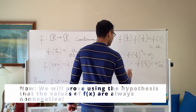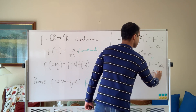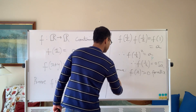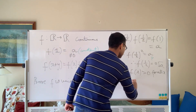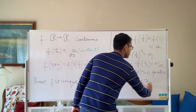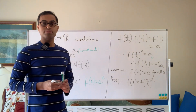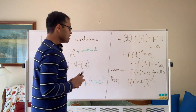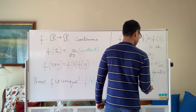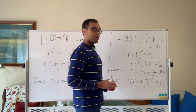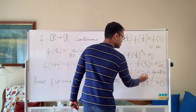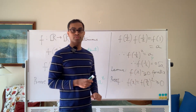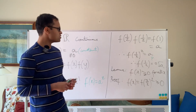Here's the lemma: f(x) > 0 for all x. The proof is very elegant. f(x) = f(x/2)·f(x/2), because x/2 + x/2 = x, by our functional law. So f(x) = f(x/2)², which is always at least 0. We know it's a perfect square, so it's always non-negative. We'll show it's never actually 0, but for now, f is always non-negative.